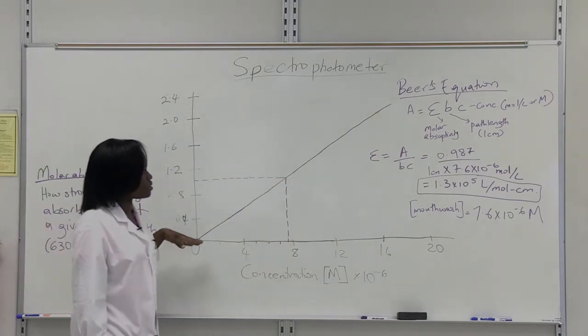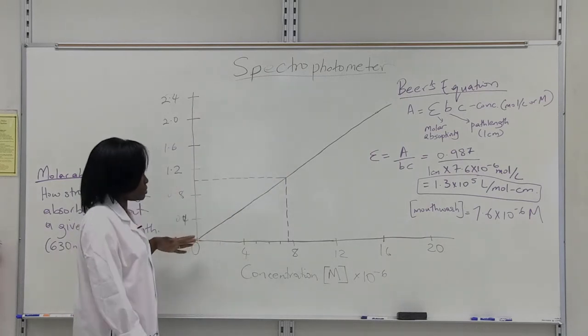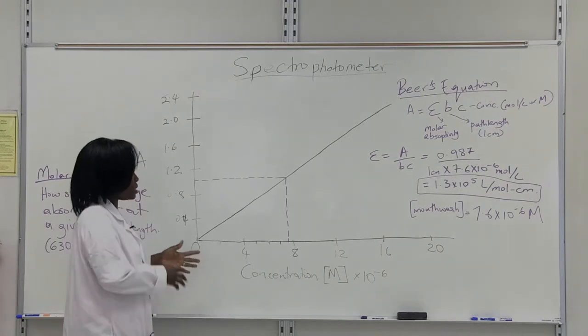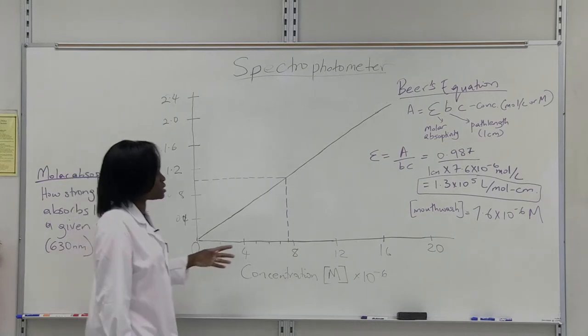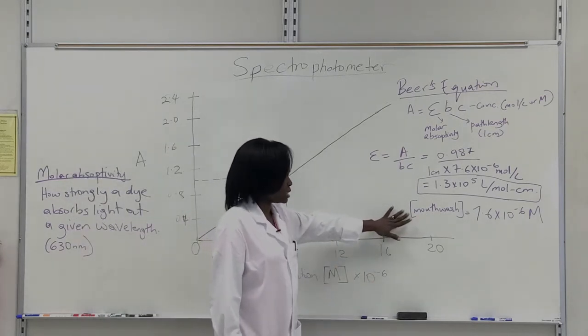So because of this, if you have your curve, this can be also termed as a standard curve, because you know the concentrations corresponding to the absorbance of these set samples. So you can determine the concentration of an unknown, which is mouthwash in this case that I use,